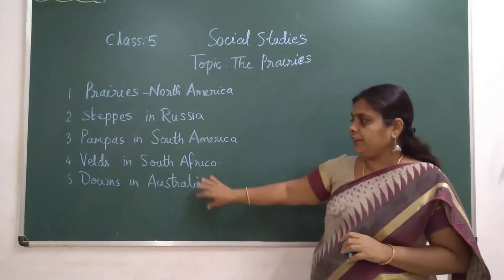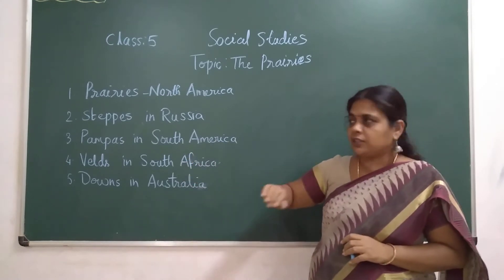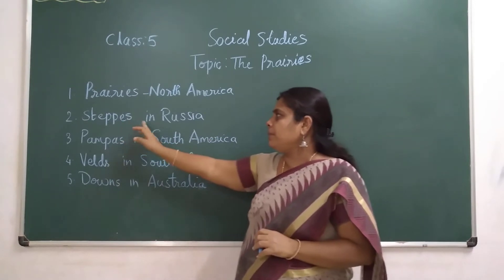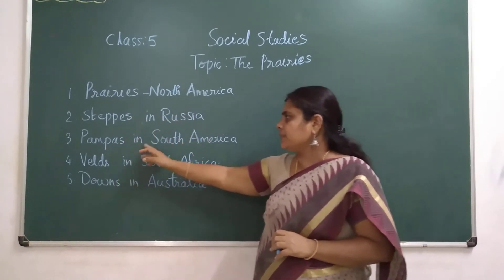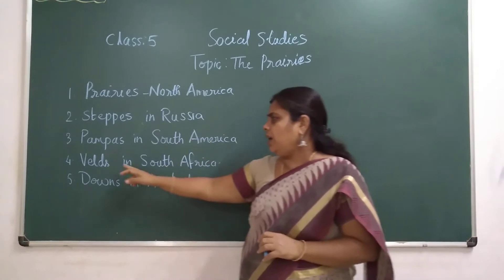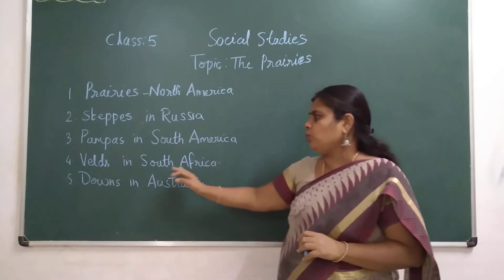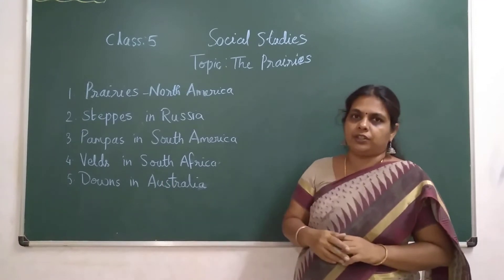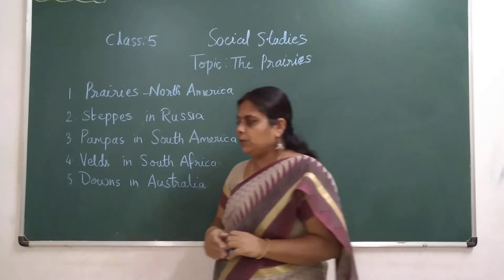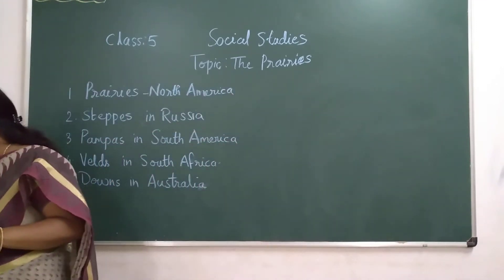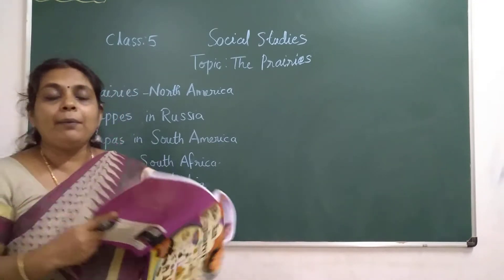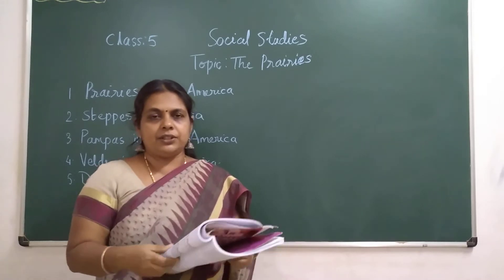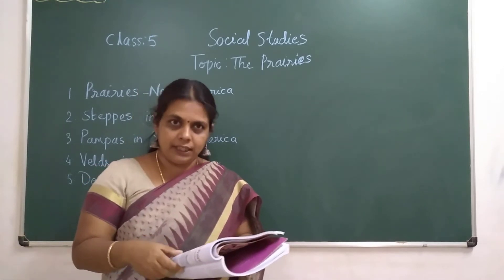In each continent they have a different name. Prairies in North America, steppes in Russia, pampas in South America, veld in South Africa, and downs in Australia. Mostly you would observe that they lie in the regions of the Tropic of Cancer and the Arctic Circle.